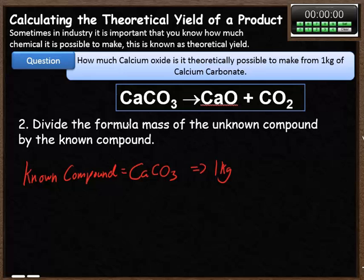Okay, our second step is to divide the formula mass of the unknown, which is the calcium oxide, by the known compound, calcium carbonate. So we know calcium carbonate is a kilogram, we don't know how much calcium oxide we've got. So that's 56 divided by 100, and that works out as 0.56.